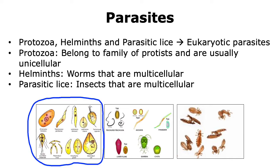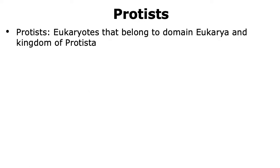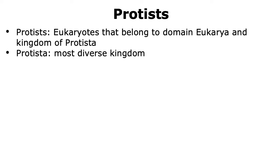In this talk, we're going to focus on the protozoa that are able to cause infections. Protozoa are eukaryotic organisms that come under the domain of Eukarya and the kingdom of Protista. Protista is the most diverse kingdom of life because of the variety of organisms that come under this kingdom. These include fungi-like organisms that have a cell wall and are heterotrophs but are usually unicellular.